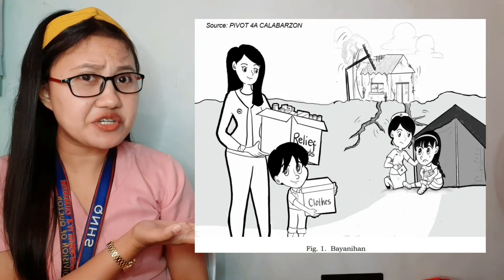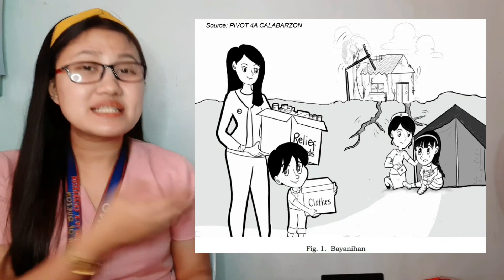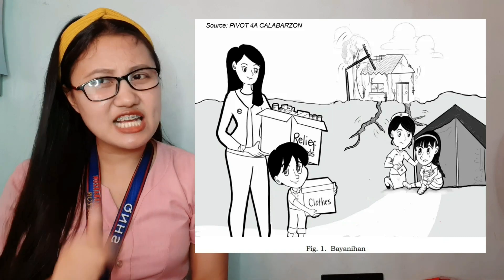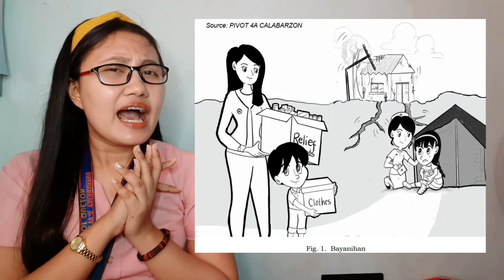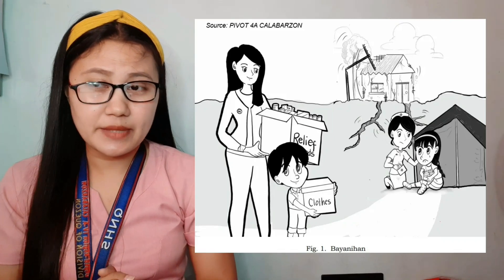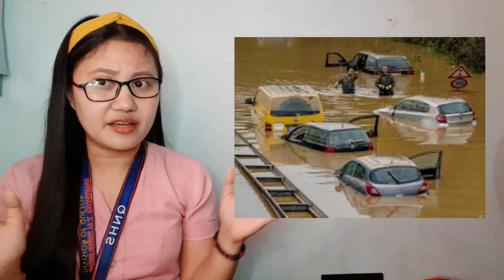What do you observe in this picture? Masasabi nyo ba na merong problema sa picture na to? Kung yes ang sagot mo, ibig sabihin aware ka sa kung ano ang nangyayari sa ating mundo, particularly in our country, the Philippines. Sa panahon ngayon, may makikita tayo na andyan ang pandemic, si coronavirus, at nandyan din ang mga natural disasters kagaya ng lindol, ng bagyo, ng pagbaha, and everything. Now, if I'm going to ask you, ano kaya ang magandang solusyon sa mga problemang ito?